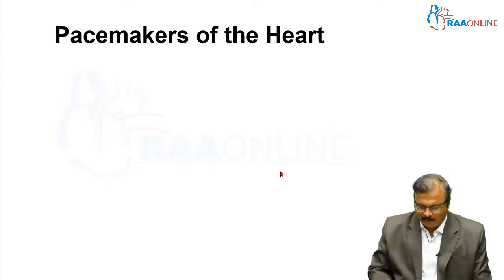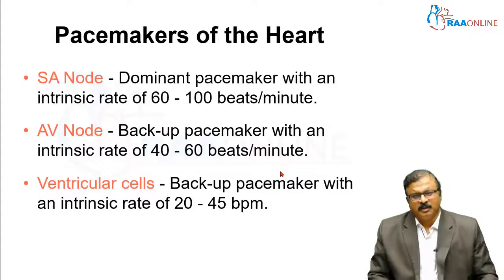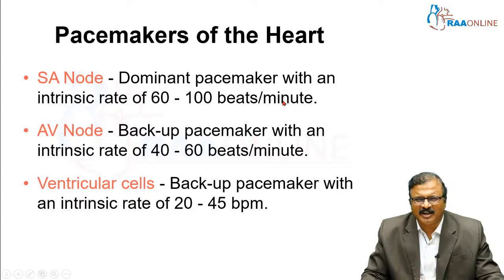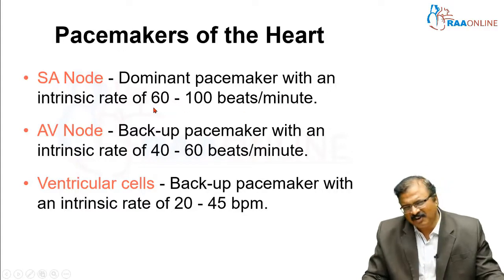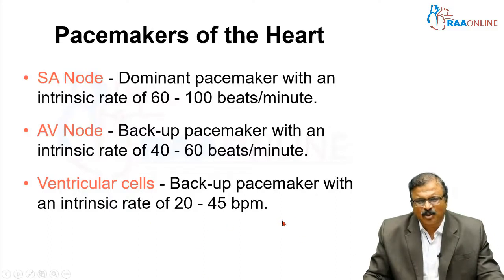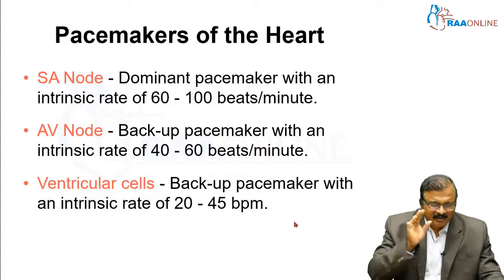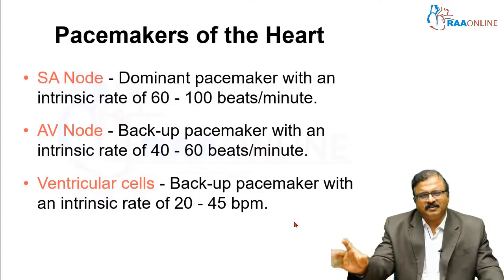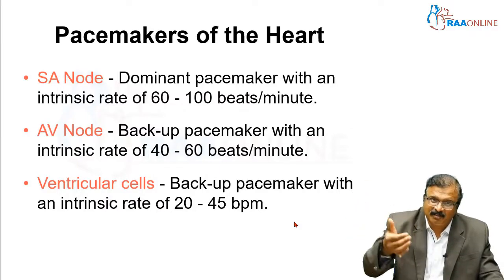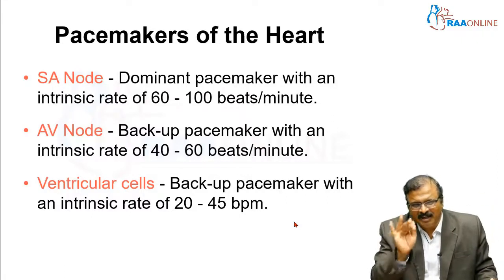Pacemakers of the heart — this is what we should know. SA node: 60–100 beats per minute, usually 60–80; above 100 is tachycardia, below 60 is bradycardia. AV node: 40–60 beats per minute. Ventricular cells: 20–45 beats per minute. So if there is a ventricular rhythm, the rate will vary from 20 to 40. AV node rhythm is 40–60. Arrhythmia differs from normal rhythm. If the SA node is not functioning and only the AV node is functioning, the heart rate will be different.